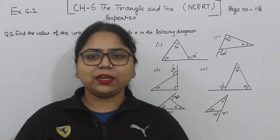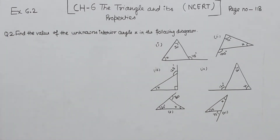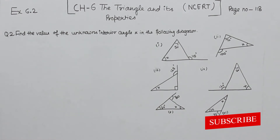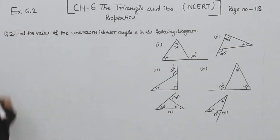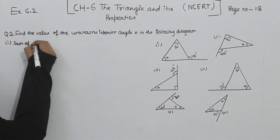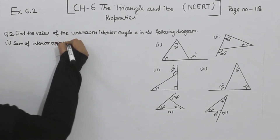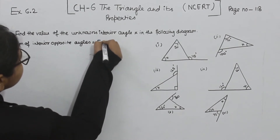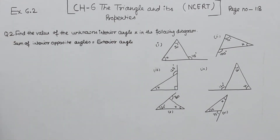Hello everyone, this is Preeti. We are here with another question of Exercise 6.2, page number 118, question number 2: find the value of the unknown interior angle x in the following diagrams. We have to find the value of the interior angles when the exterior angles are given. The key statement is: the sum of interior opposite angles is equal to the exterior angle.